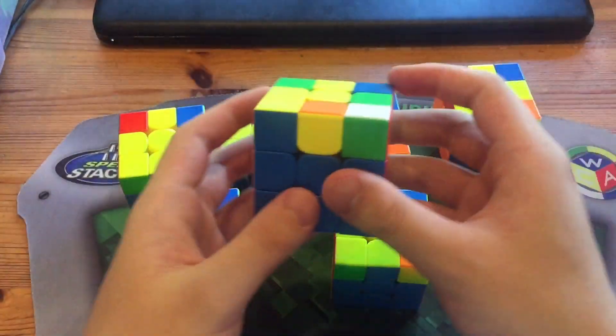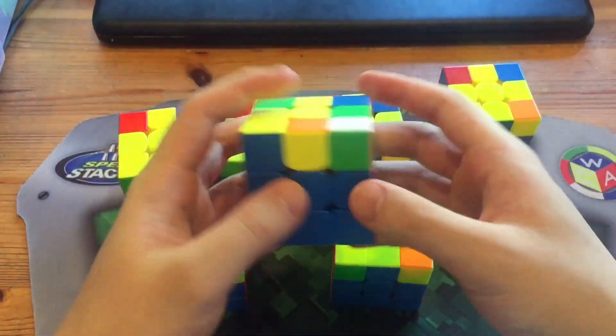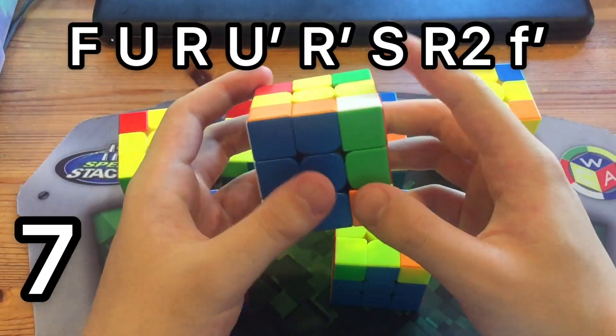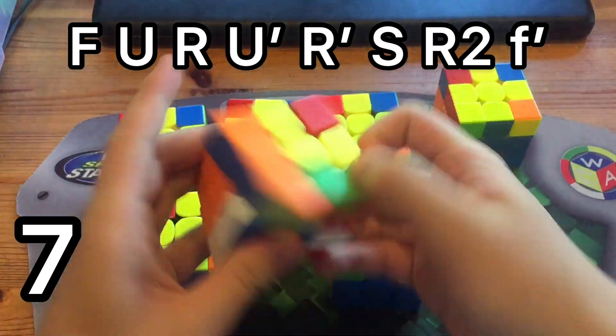And now the final way, it's the ZBLS and also a dot avoider. So you do F U R U' R'. And instead of doing F', you do S R2 f'. And it is quite fast.